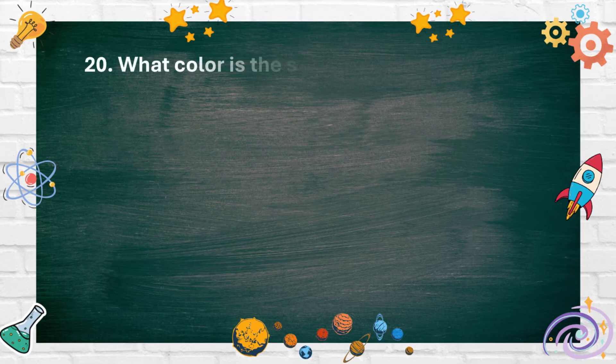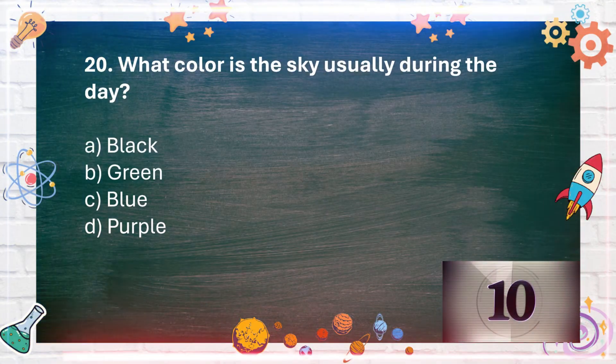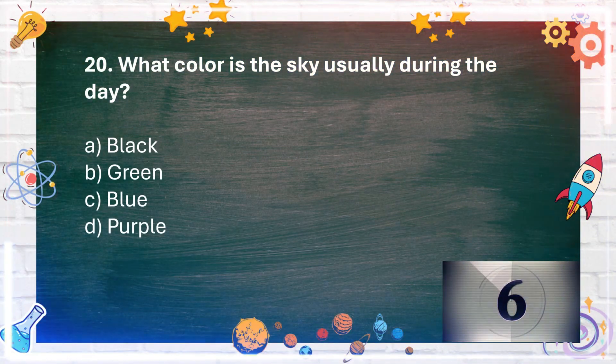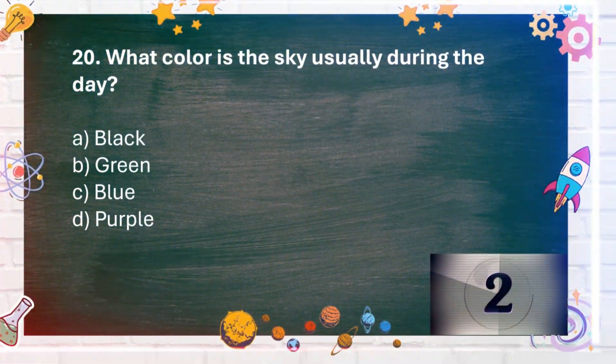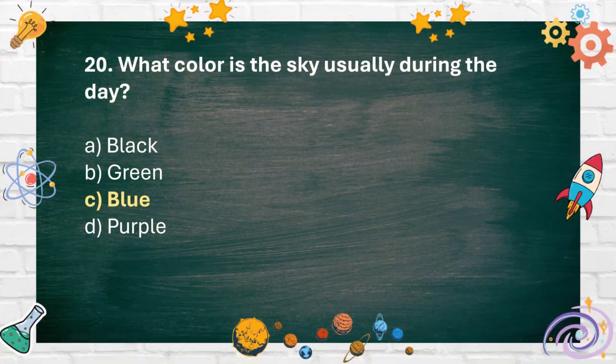Number 20. What color is the sky usually during the day? A. Black B. Green C. Blue D. Purple. The answer is C. Blue.